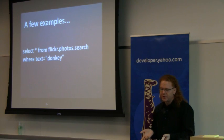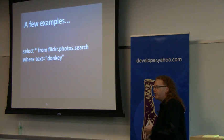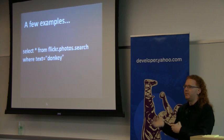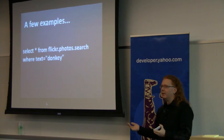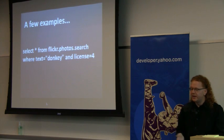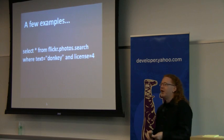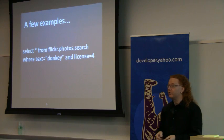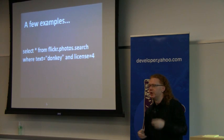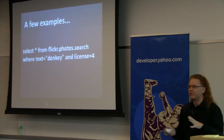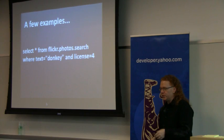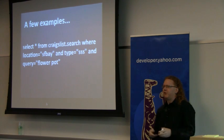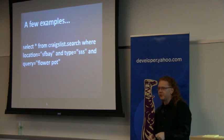A few examples: SELECT * FROM flickr.photo.search WHERE text='donkey' — finds you Flickr photos where the text, description, or filename is 'donkey'. Before YQL, you had to go through Flickr authentication, get your OAuth key, and most people used the RSS output rather than the API. Now you can use the full API with text search. Add WHERE license=4 — very important: if you ever show Flickr photos online, make sure they have a Creative Commons license, otherwise Flickr users will come down on you like a ton of bricks.